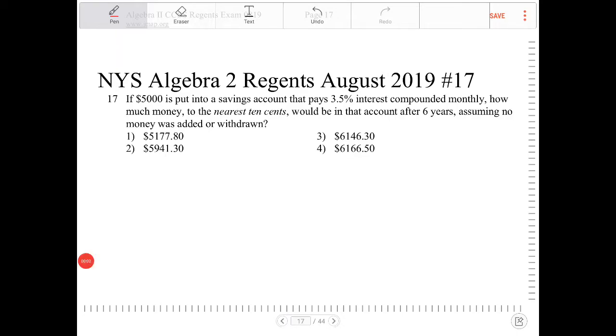If $5,000 is put into a savings account that pays 3.5% interest compounded monthly, how much money, to the nearest $0.10, would be in that account after six years, assuming no money was added or withdrawn?